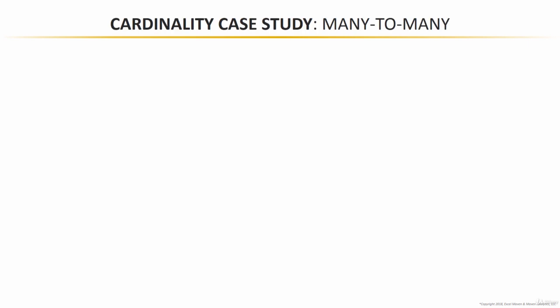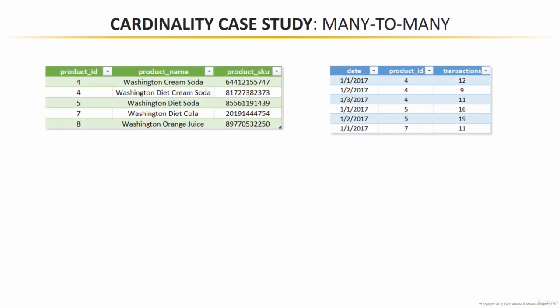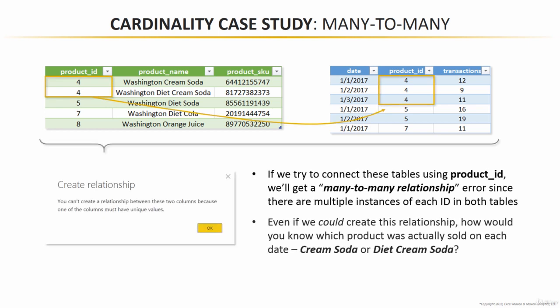Our first cardinality case study is many-to-many. Consider these two tables: a product lookup table in green on the left, which has IDs, names, and SKUs, and a data table in blue on the right, which has dates, product IDs, and transactions. If you were to try to create a relationship between these two tables, you'd get an error message saying you can't create a relationship because one of the columns must have unique values. As you can see, we've got two instances of product ID number four in the lookup table and three instances in the data table.